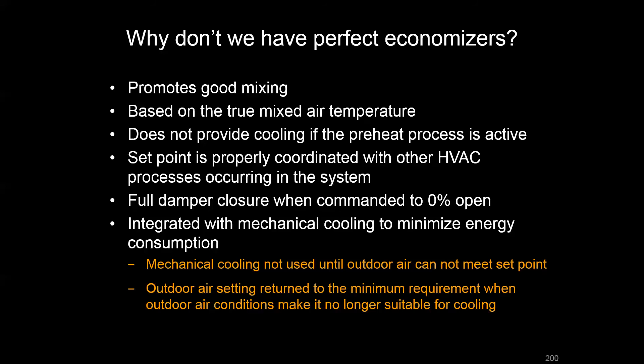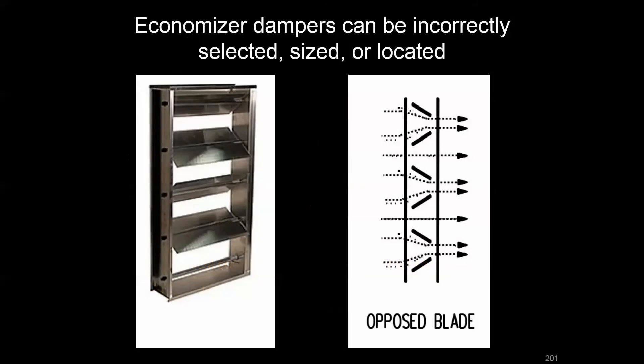So why don't we have perfect economizers? There are many things that need to go right, and only a few that can go wrong to cause performance problems. Poor mixing results from improperly sized dampers, bad relative positioning, or selecting the wrong damper type — such as an opposed-blade type that won't redirect airstreams into one another — leading to inadequate mixing in the mixed air plenum.